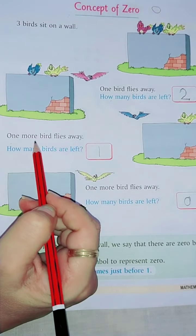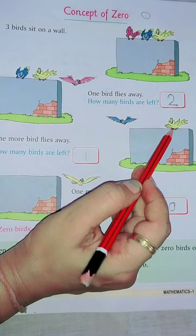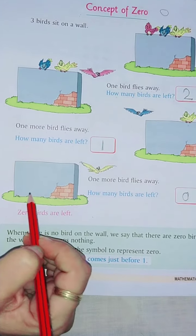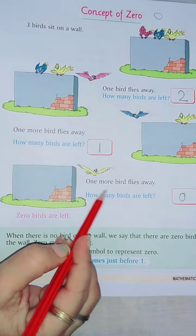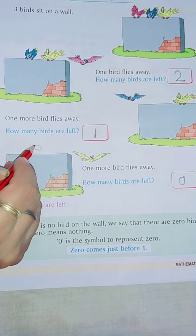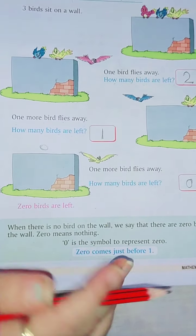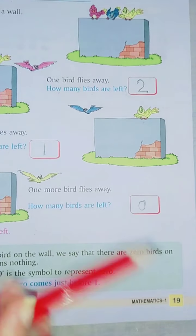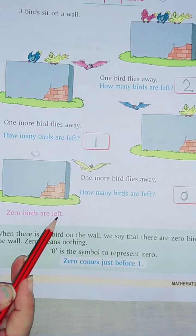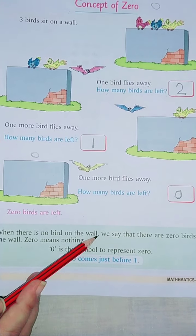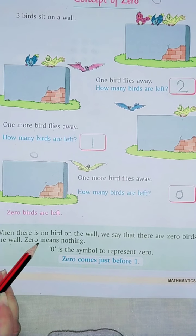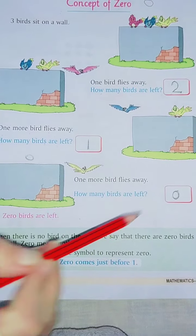Now next picture, 1 more bird flies away. How many birds are left? Now there were 2, now 1 more flyed away. So how many are left? 1. So put here 1. Now in next picture you will see the wall is empty, no bird is there. 1 more bird flies away. Jo 1 thi wo bhi fly kar gai. How many birds are left? Zero. How many birds? Zero. Kuch bhi nahi hota hai matlab zero. So you have to write zero. It's not that you will leave it empty, you have to write the answer zero. There are no birds.